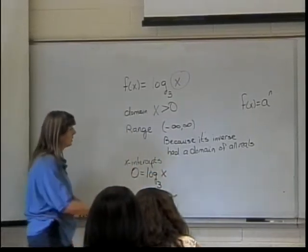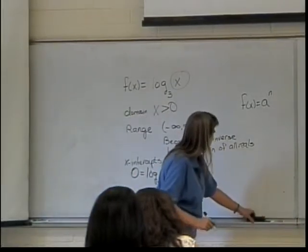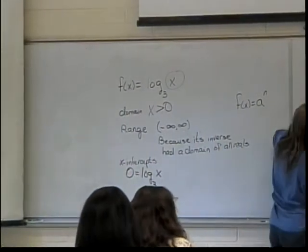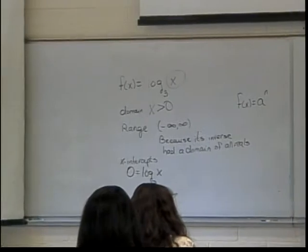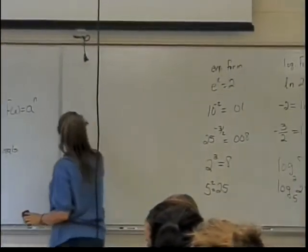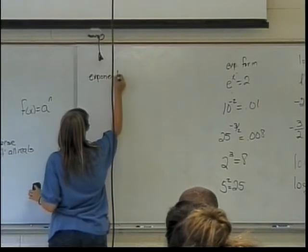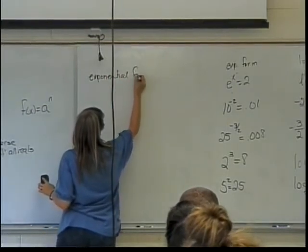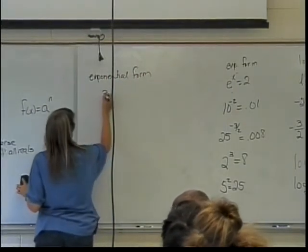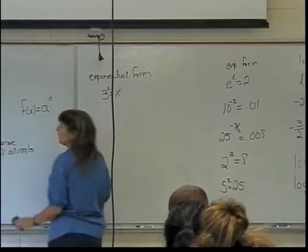When I change this to exponential form, what will it look like? 3 to the 0. So in exponential form, it looks like 3 to the 0 equals x. But what's 3 to the 0?